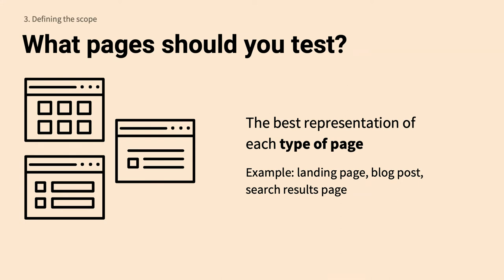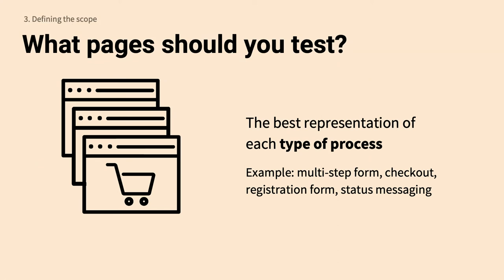You'll also want to test the best representation of each type of page. Since we're at a Drupal camp, you're familiar with content types — I'll pull up all pages for different types like landing pages and blog posts and pick the best representation. You'll also want to test the best representation of each type of process: multi-step forms, checkout, registration forms. For compliance, if you have something in a process like a multi-page form, each page in that process must be compliant in order for all of it to be.